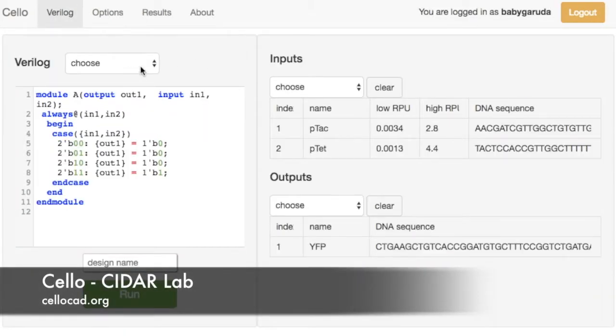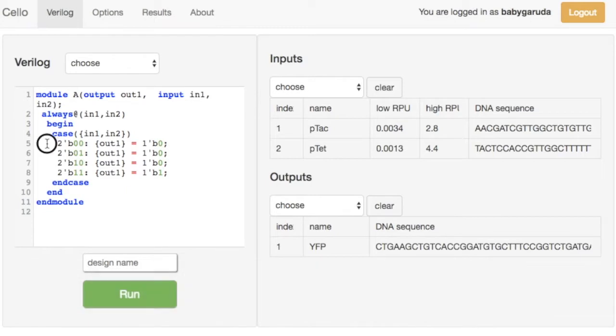Nowadays, we have software tools like Cello that are able to generate the designs of genetic circuits based on specifications of digital circuits in Verilog format.